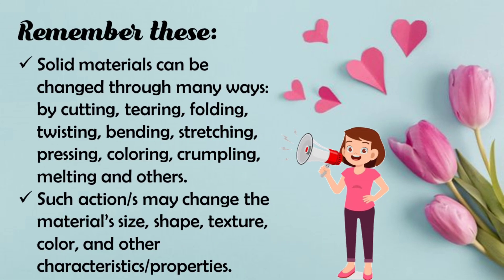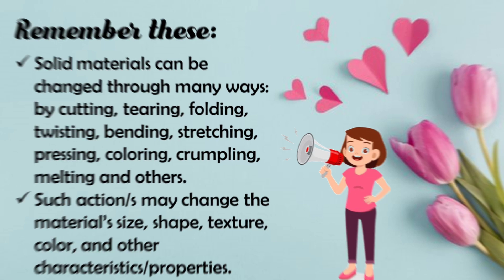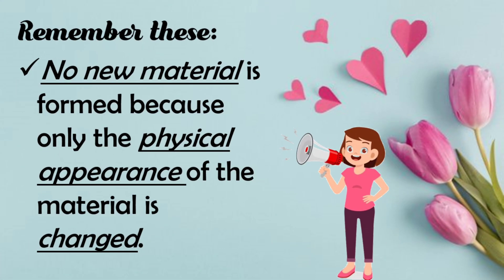Remember this. Solid materials can be changed through many ways — by cutting, tearing, folding, twisting, bending, stretching, pressing, coloring, crumpling, melting, and others. Such actions may change the material's size, shape, texture, color, and other characteristics or properties. No new material is formed because only the physical appearance of the material is changed.